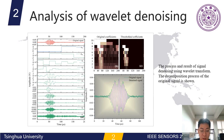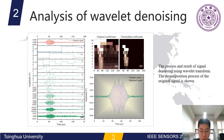This figure shows the process and result of signal denoising using wavelet transform. The decomposition process of the original signal is shown, and besides, the original and thresholded wavelet coefficients are shown.